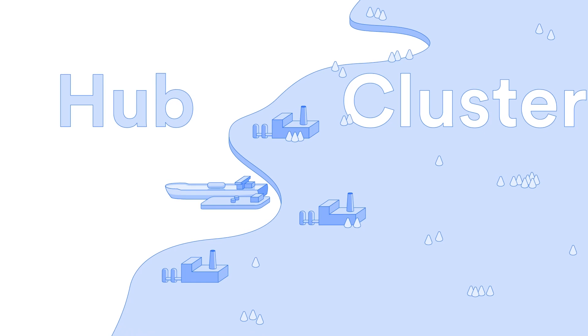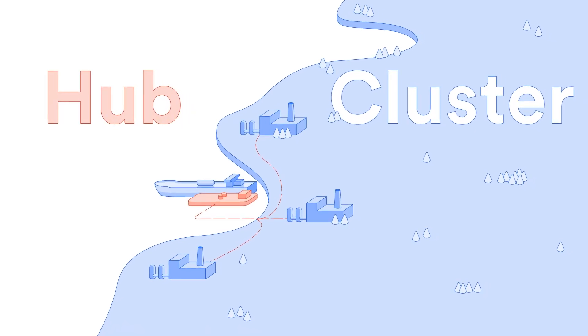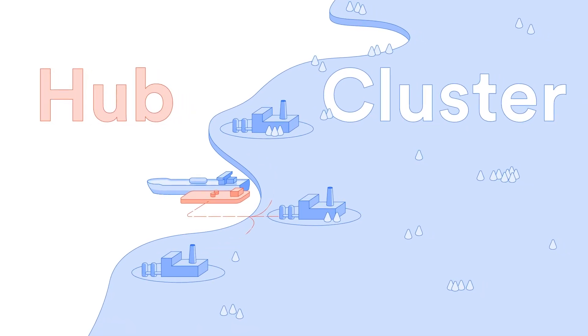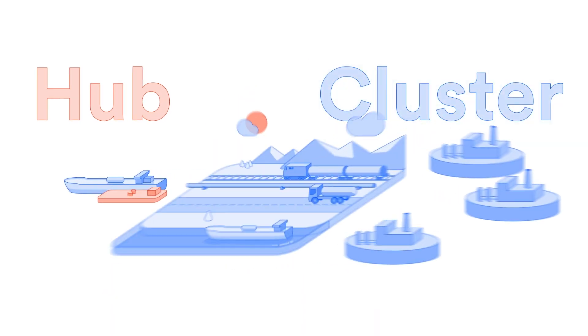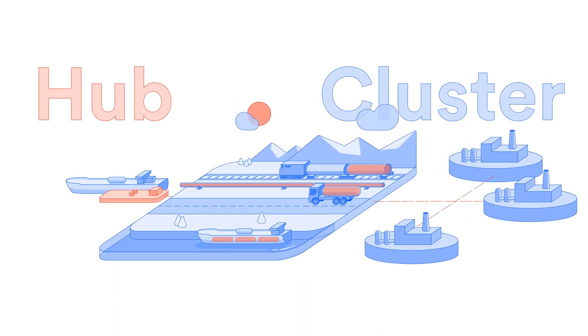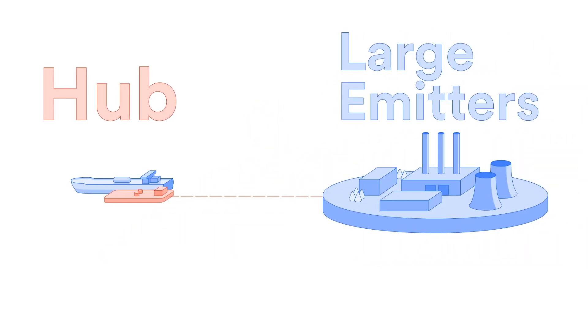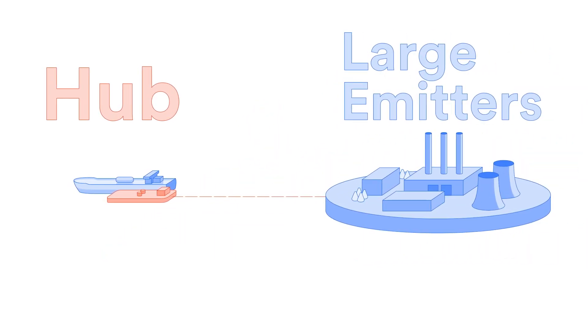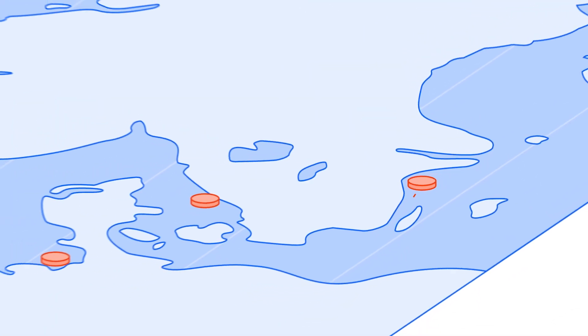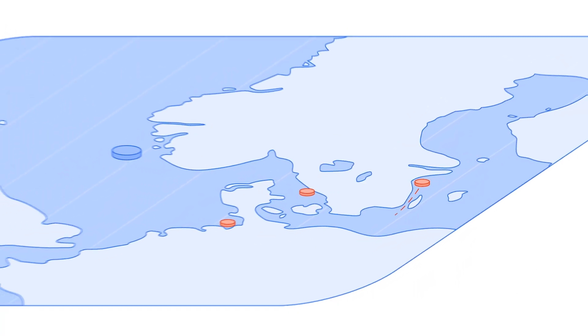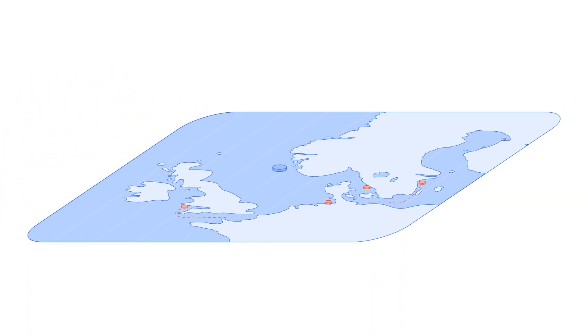A CO2 collection hub and cluster network will bring together multiple CO2 emitters. Clustering involves several industrial facilities creating a network that shares CCS infrastructure and knowledge. The hub and cluster approach will reduce costs and risks for many potential CCS projects and enable CO2 capture from small volume industrial facilities.